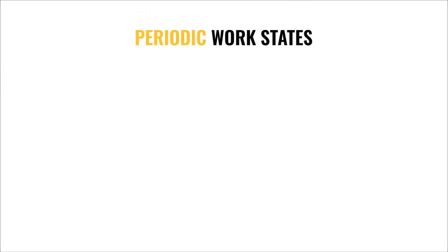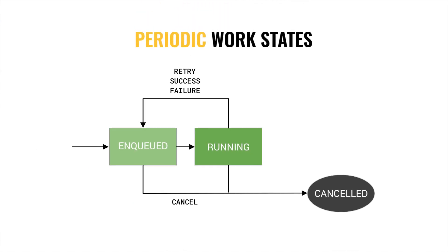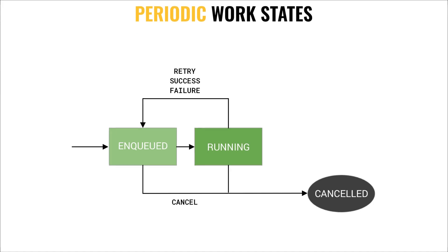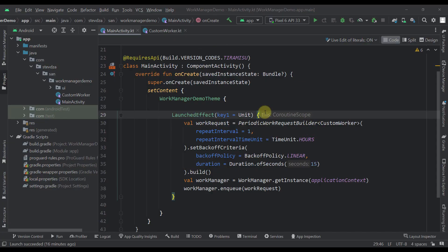However, with a periodic work request, we don't have those terminal states except cancel. Our work is basically never done unless we explicitly cancel that periodic work request. Here I have prepared one demo project where I'm going to showcase how a simple periodic work request can be enqueued.